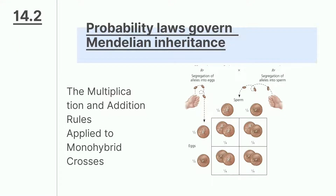Selanjutnya kita akan membahas The Multiplication and Addition Rules Applied to Monohybrid Crosses. Menurut aturan penjumlahan, probabilitas bahwa salah satu dari dua atau lebih peristiwa terjadi dihitung dengan menambahkan probabilitas masing-masing. Probabilitas untuk satu cara memperoleh heterozigot F2, yaitu alel dominan dari telur dan alel resesif dari sperma, adalah 1/4. Probabilitas cara lain, alel resesif dari telur dan alel dominan dari sperma, juga 1/4. Menggunakan aturan penjumlahan, probabilitas F2 heterozigot adalah 1/4 + 1/4 = 1/2.